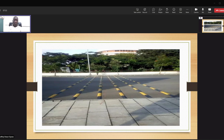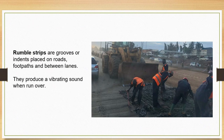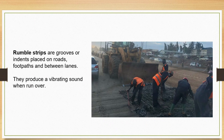I want to move to the purposes — why they are made. Rumble strips are grooves, or indents placed on the road, on footpaths and between lanes. They produce a vibrating sound when you run over them, and the sound that is commonly known is the 'drrr'. When you go over the drrr bumps, then you get to meet this — so they are grooves or indents that appear on the road.